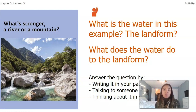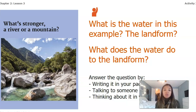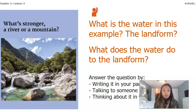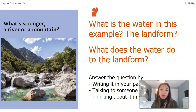Our first question is: what is the example of water in this picture and what is the example of the landform? What does the water do to the landform? In this example the water is the river flowing through, and the landform is the mountain. The river is changing the shape of the mountain over time — this is probably a slow process, but as the water flows through the mountain it's making it become smaller and more rounded.